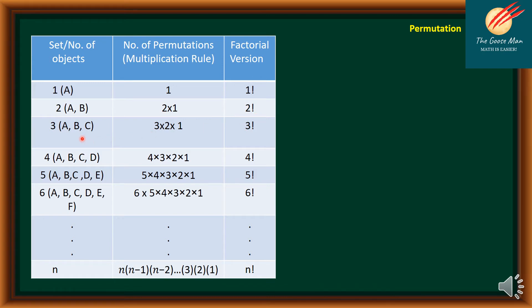If we have three objects, for the first choice we have three options, the second has two, then one. So we have 3 times 2 times 1, which is equal to 3 factorial.